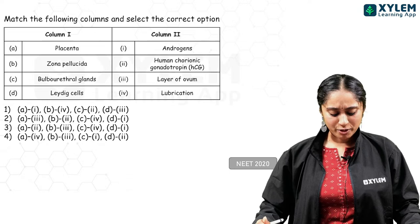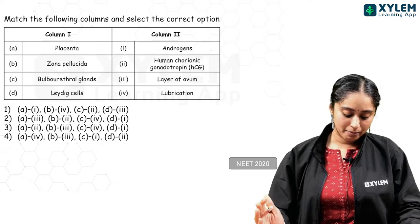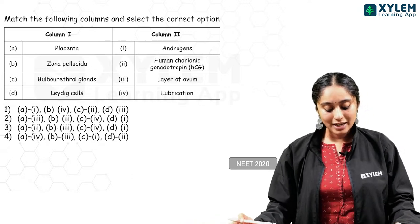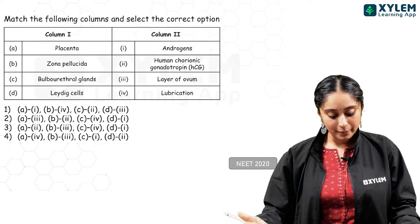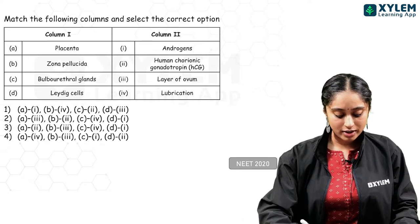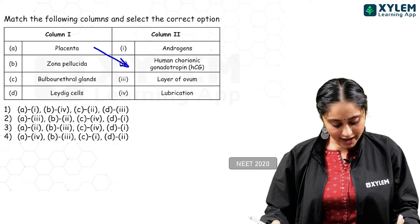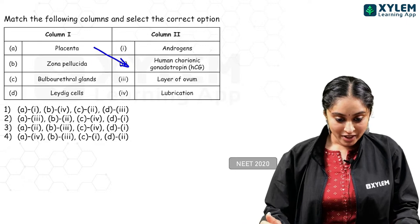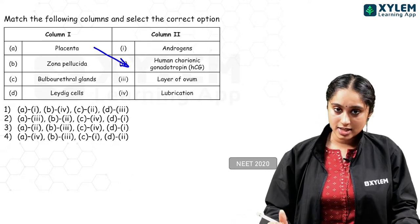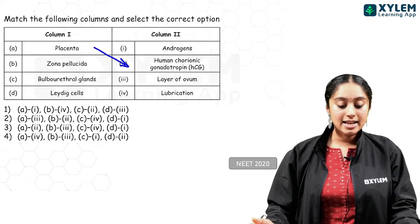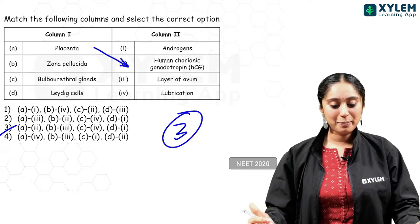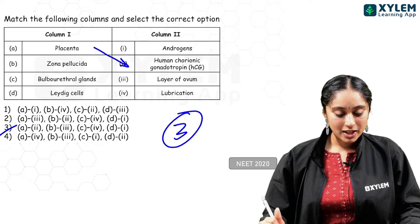NEET 2020 match the following: column 1 has placenta, zona pellucida, bulbourethral glands, Leydig cells. Column 2 has androgen, HCG, layer of ovum, lubrication. Placenta releases HCG (A→2). Zona pellucida is a layer of the ovum (B→3). Bulbourethral gland secretion is involved in lubrication (C→4). Leydig cells produce androgen (D→1). Good job!